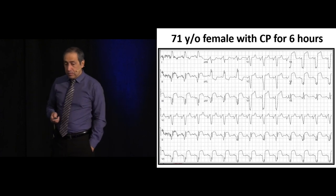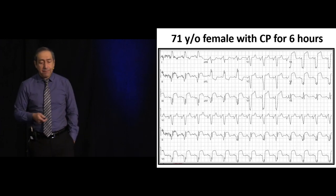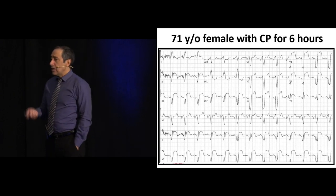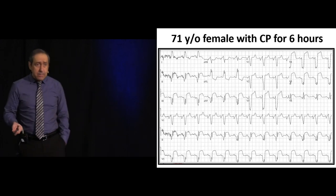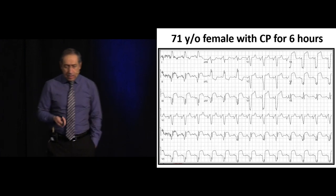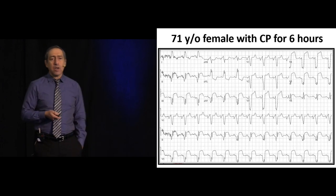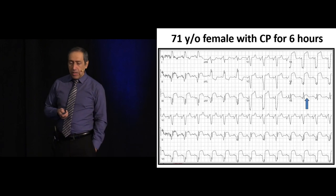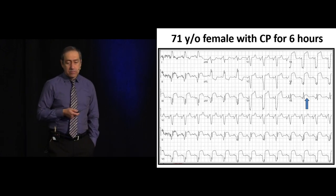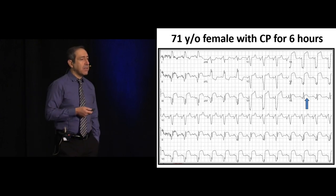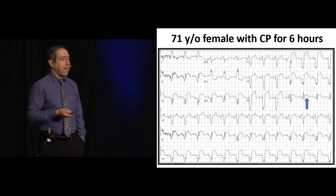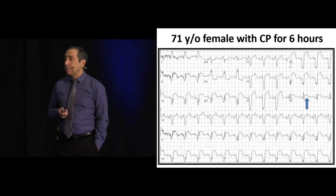Now let's look at this EKG example with left bundle branch block. Do you think this is a normal left bundle, or is there a hint of MI? How high are the ST segments? Pretty big — something like five or so. But is there concordance in any lead? Look here: is the QRS up or down? The QRS is up. Where should the ST segment normally be? Down. But here it's up — that is not usual. This patient is actually more likely having anterolateral MI rather than a typical left bundle branch block pattern.